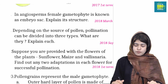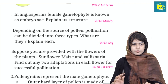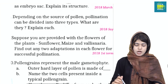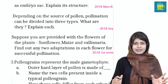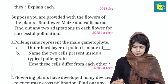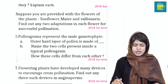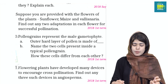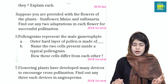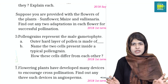Depending on the source of pollen, pollination is divided into types. Which type of pollination is very important. Suppose you are provided with plants like sunflower, maize, and vallisneria. Find out any adaptations in each flower for successful pollination.